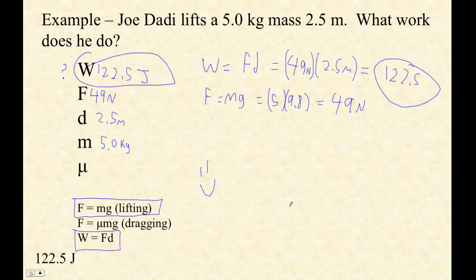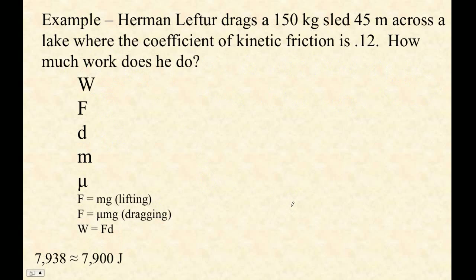Let's do one more example with friction, because friction could be a force. Okay. So here we are, Hermann Lefter. Hermann Lefter drags a 150 kilogram sled. So that must be the mass. 45 meters across the lake. That must be the distance. Coefficient of friction is 0.12. We are definitely dragging this thing. So our force is mu times m times g. So it's 0.12 times 150 times 9.8. 0.12 times 150 times 9.8. 176.4.